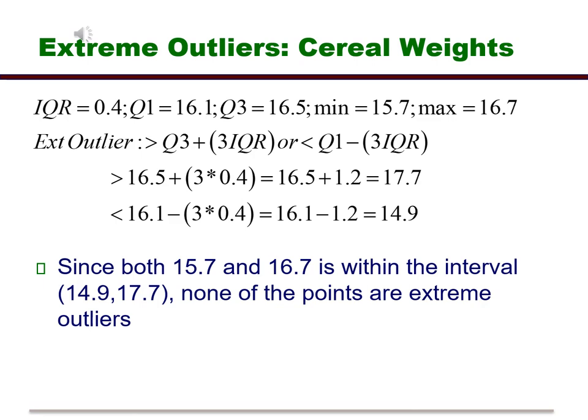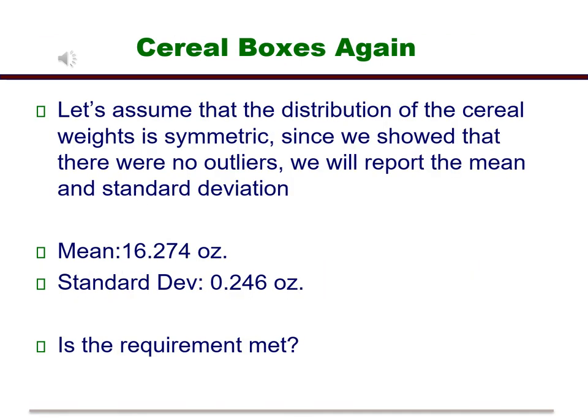Now let's go back to the cereal weights. Since we saw that the distribution was symmetric and since we just showed there are no outliers, we can report the mean and standard deviation of the cereal box weights. The mean is 16.274 ounces and the standard deviation is 0.246 ounces. So is the requirement that the target weight should be 16 ounces met?